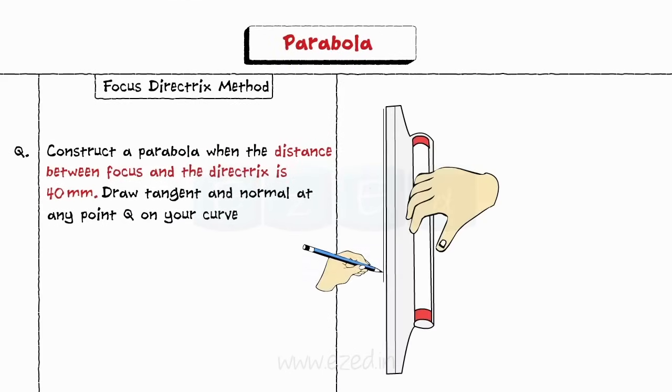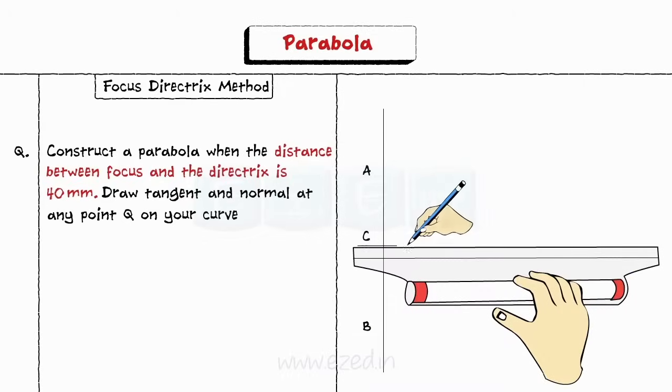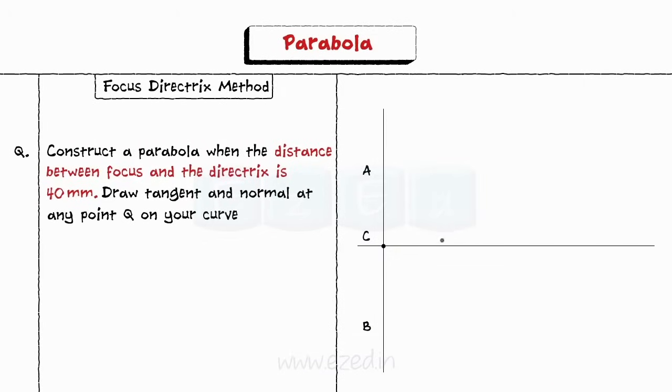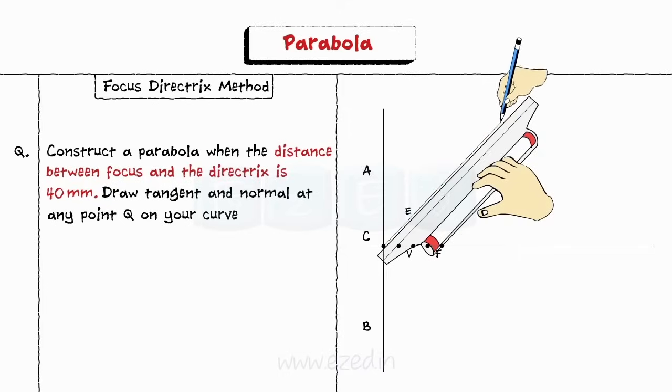Step 1: Draw a vertical line AB and at point C draw a horizontal line. Step 2: Mark point F 40 mm from point C and divide CF in 4 equal parts. Step 3: Mark the vertex V on the second division point from F. Step 4: From V draw a perpendicular line and mark point E such that VF equals VE. Join CE and extend it.